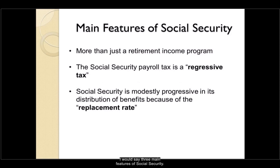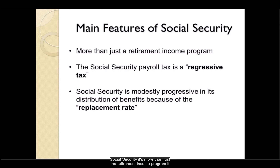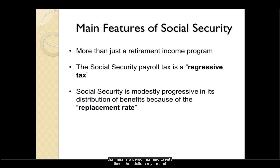What most people think of when they hear the term Social Security is the retirement annuity part of the program. But Social Security is more than just a retirement income program — it also provides wage earners with disability insurance and life insurance. Social Security is funded through its own payroll tax, which is a regressive tax system, meaning a person earning $20,000 a year and a person earning $106,000 a year will both pay the same tax rate.